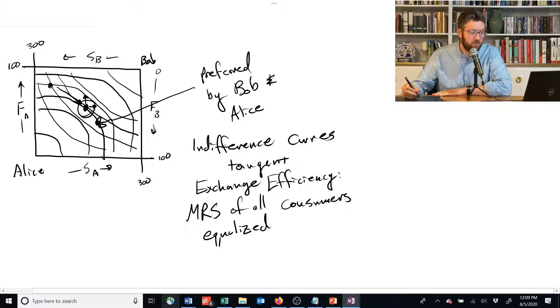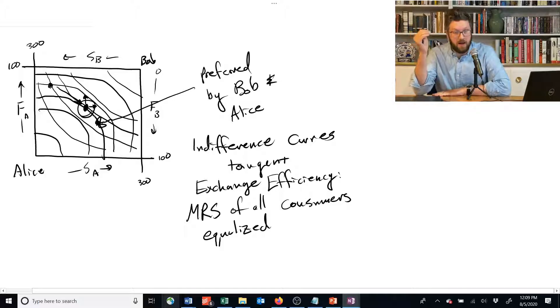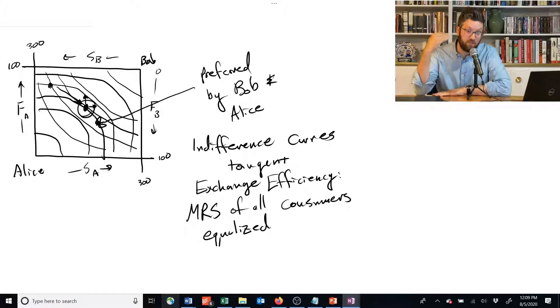If we go in the other direction and we give Alice a little bit more shelter, we slip below Bob's indifference curve. He's worse off. He doesn't prefer that.